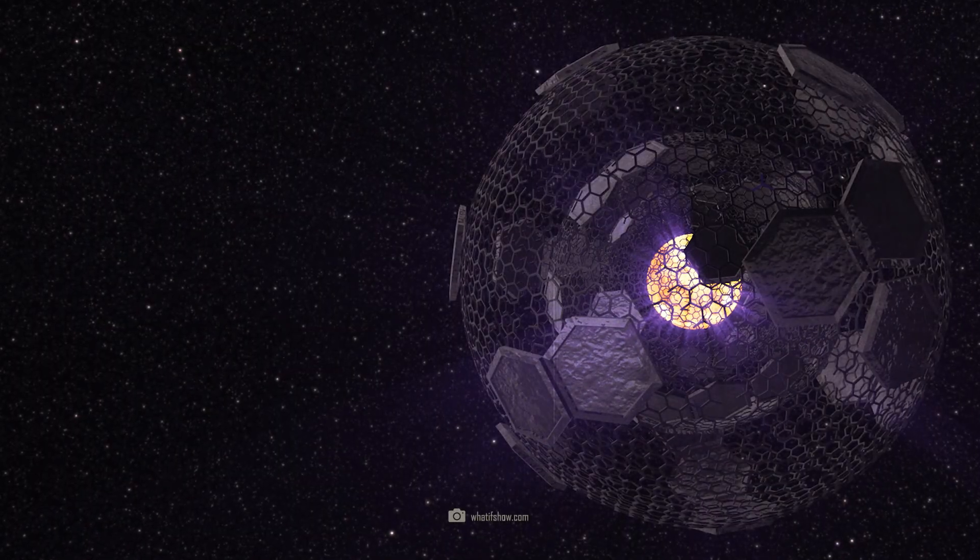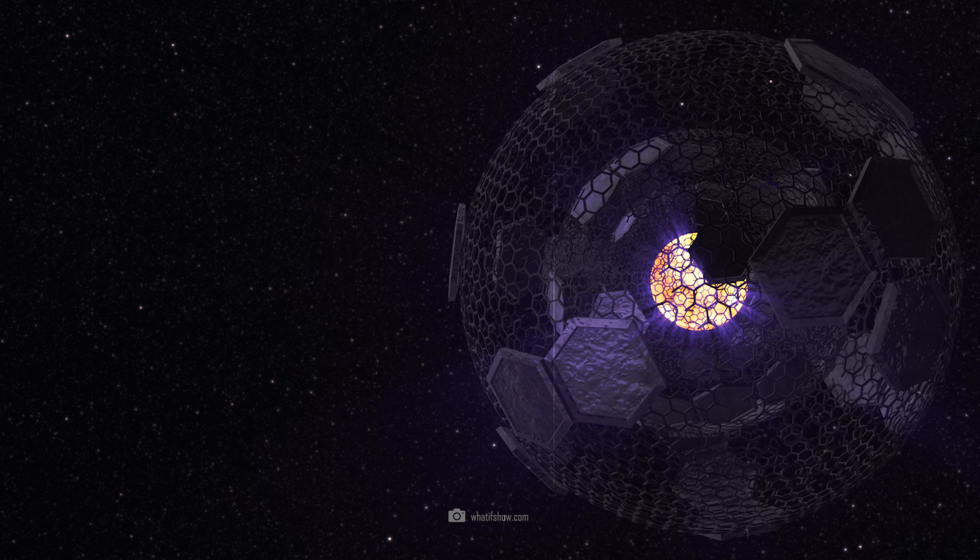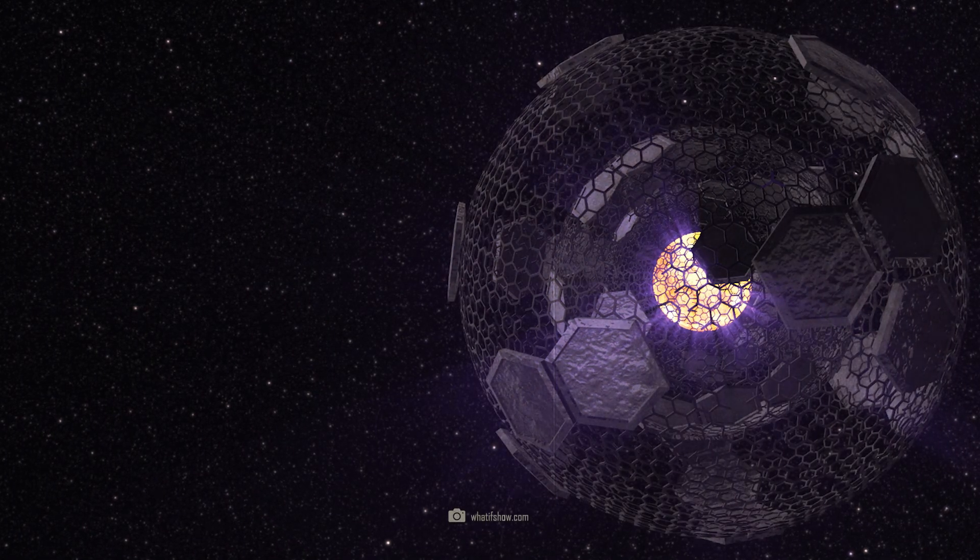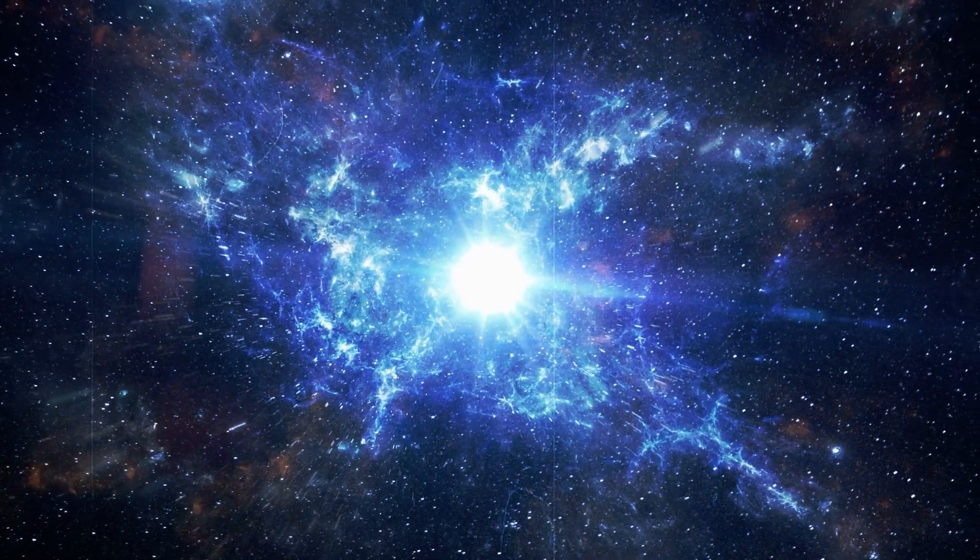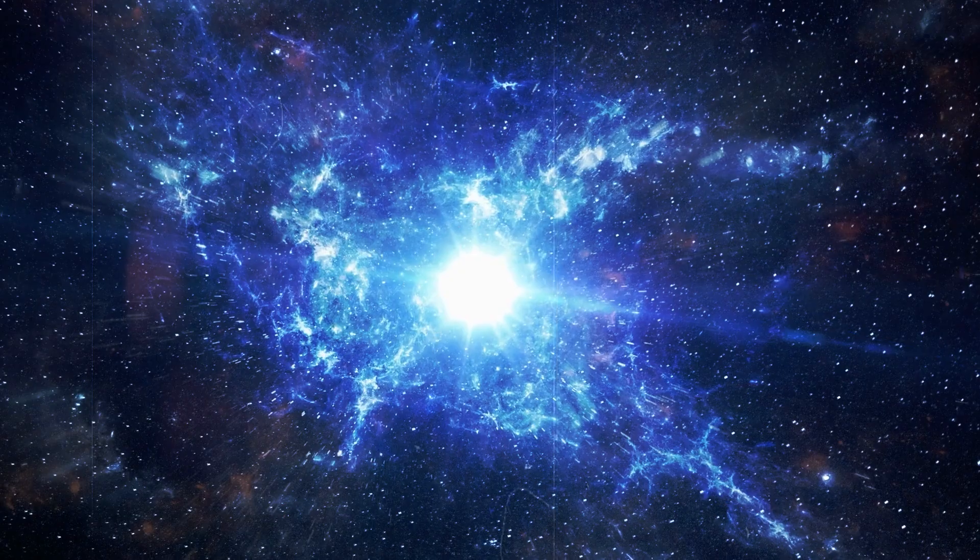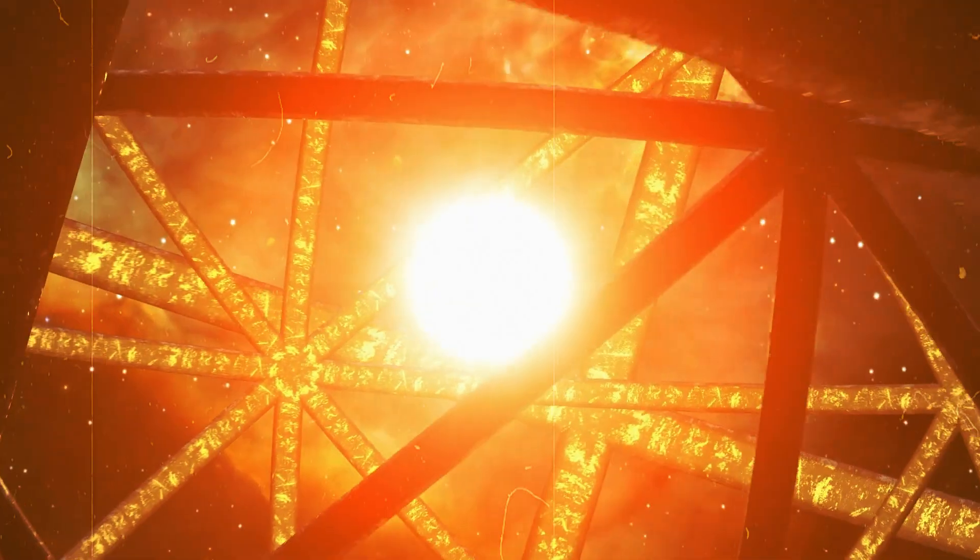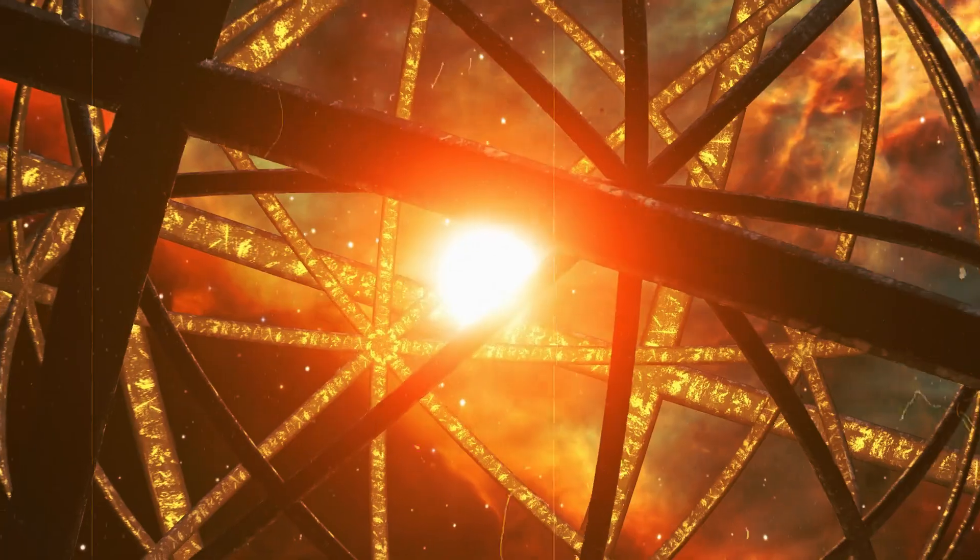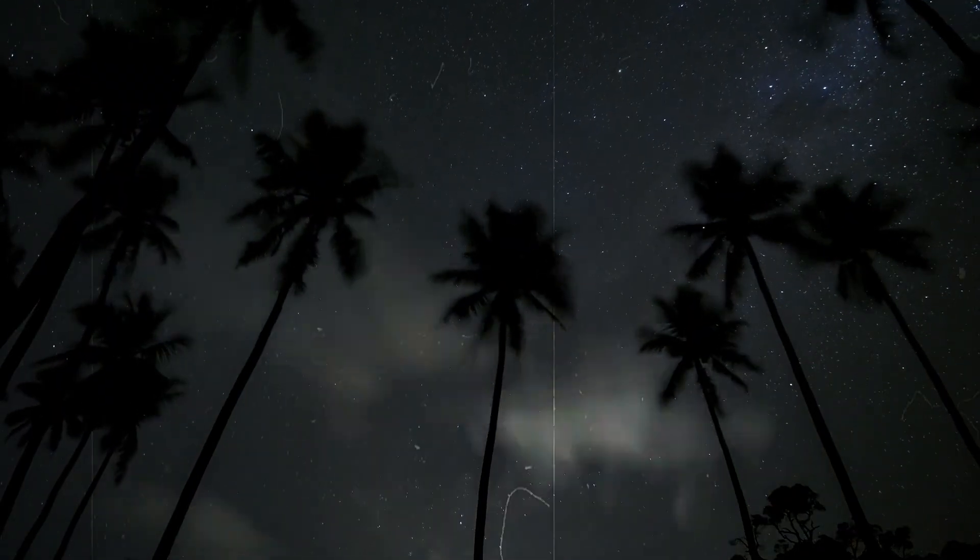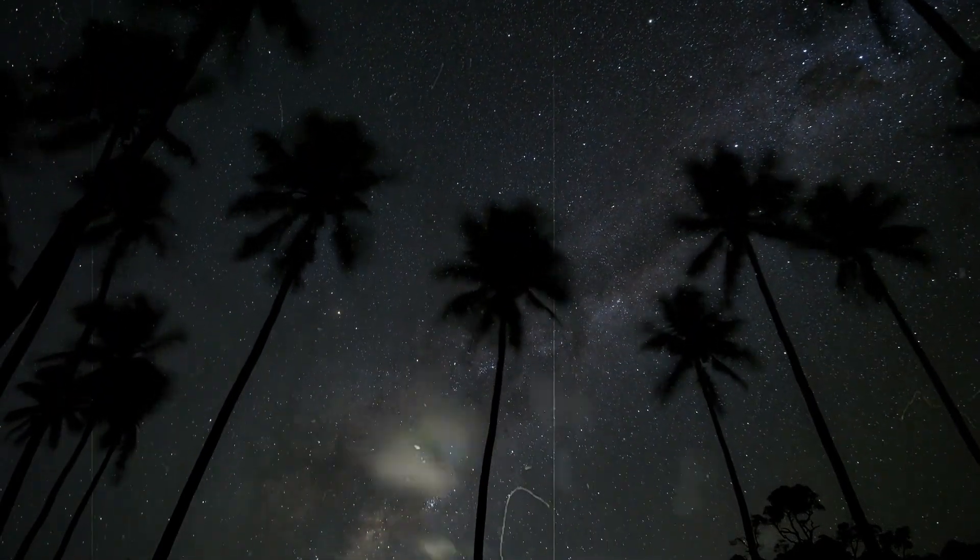To harvest the energy of a star, there is the concept of the Dyson shell, a gigantic solid shell that completely surrounds the star. We can be sure that this sphere would capture all of the star's energy. However, due to its rigid design, such a structure in space would also pose immense structural challenges and instability problems.